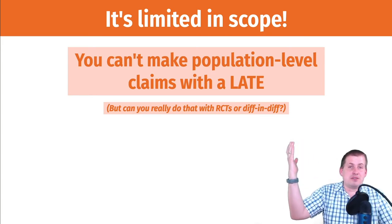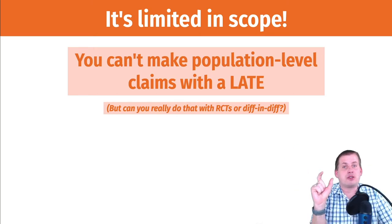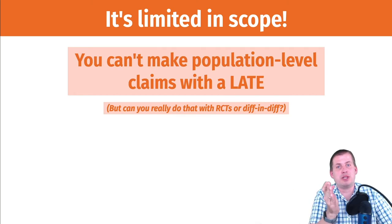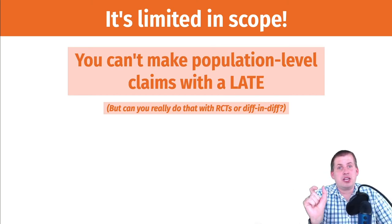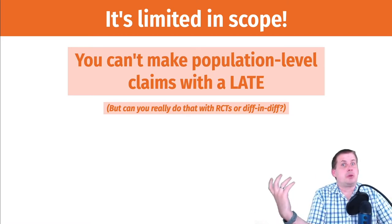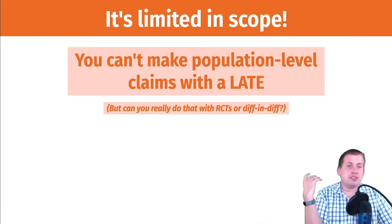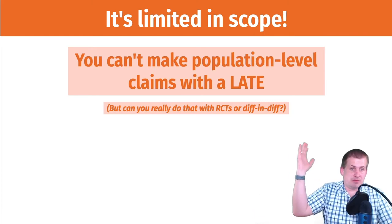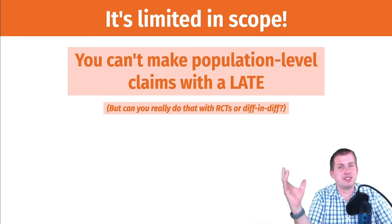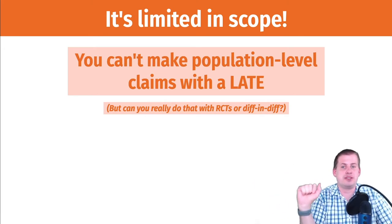With diff-and-diff too, every diff-and-diff has a treatment and control group that are very similar — like New Jersey and Pennsylvania are very similar, and you found a causal effect there. But does that same causal effect apply to Alaska or Montana? I don't know. So diff-and-diff arguably gives you a population level average treatment effect, but it's still kind of localized.